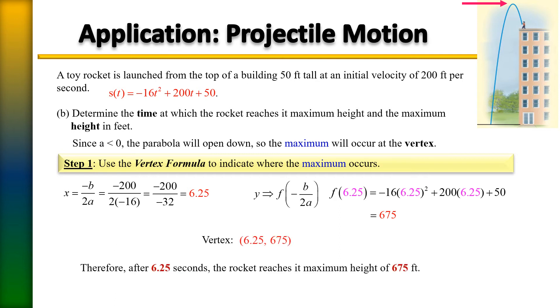So to state our answer, after 6.25 seconds, the rocket will reach its maximum height of 675 feet. Recall from previous lectures that the y value is going to tell you your maximum height. So your maximum height, remember y is the value that, the variable that goes up or down. In this case, because it's a maximum, it's up. That is why we use 675 as our maximum height and not the 6.25. It is the y value that determines the maximum. And there you have it.